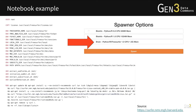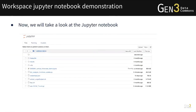We added the FreeSurfer tools and dependent scripts in the Docker image of JupyterHub, and we configured the workspace by selecting the flavor with FreeSurfer. Now let's do a live demo for the example notebook.